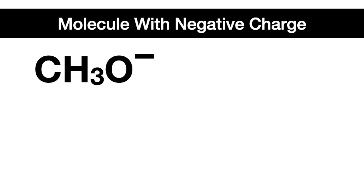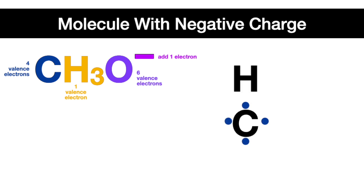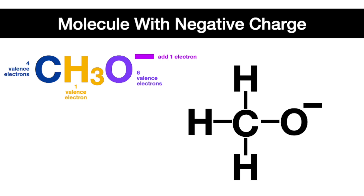Now let's do some examples with charges, starting with the negative charge. This molecule has a formal molecular charge of negative one. It has one carbon with four valence electrons, three hydrogens each with one valence electron, and one oxygen with six valence electrons, and a negative charge, which means add one electron. Start the same way with carbon as the central atom surrounded by the other atoms, but the only difference here is oxygen still has a single electron, but there's no single electron left on the carbon to form a double bond. So just remember that there was a negative one molecular charge, which means add one electron, which essentially means the oxygen will have an extra lone pair, giving it a negative charge. Here's the Lewis dot structure where oxygen gained one electron, creating one extra lone pair, and here's the molecular bond structure showing the required negative charge on the oxygen.